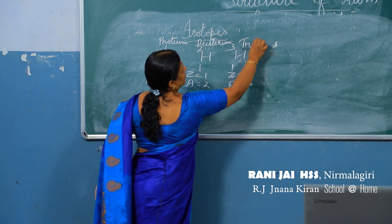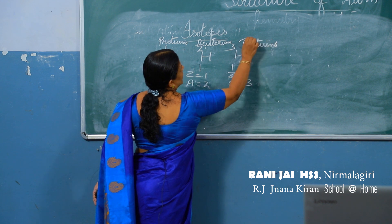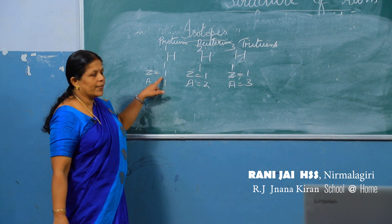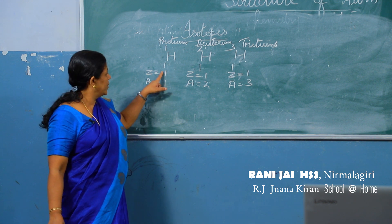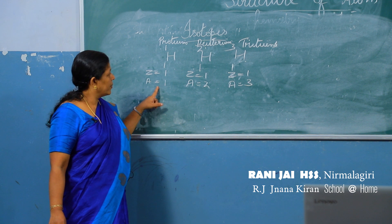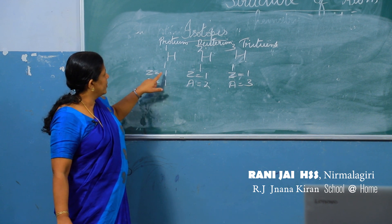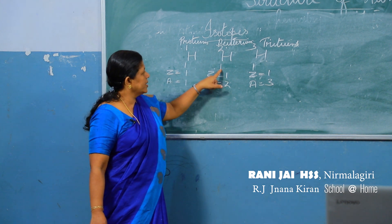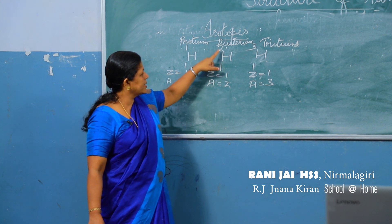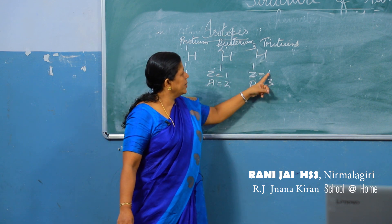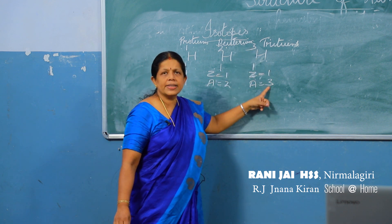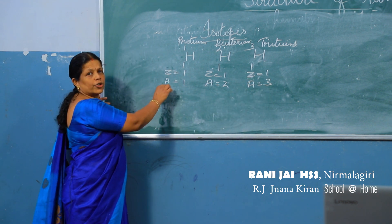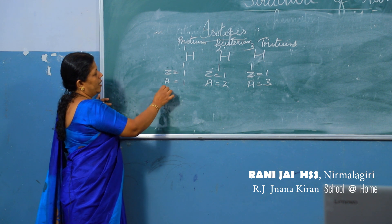But they have different mass numbers. This is called protium, this is called deuterium, and this is called tritium. These are the three isotopes of hydrogen. Here atomic number is 1, mass number is 1; here atomic number is 1, mass number is 2; here atomic number is 1, mass number is 3.